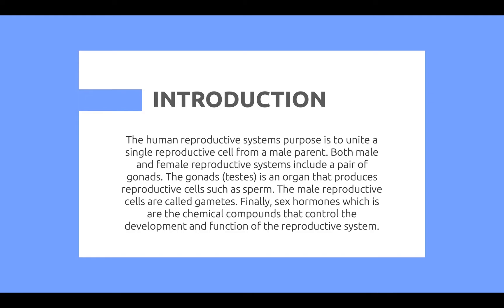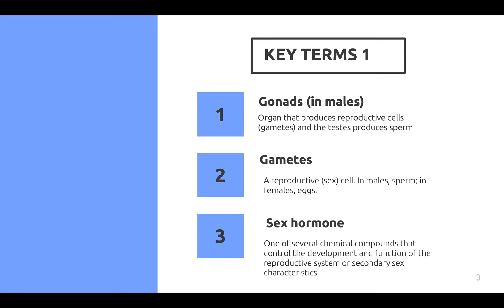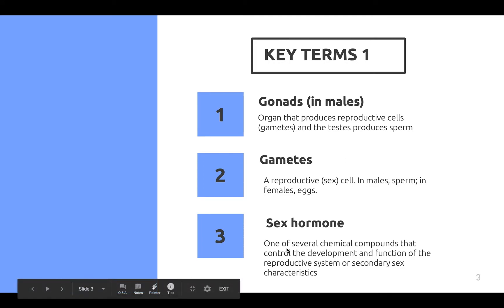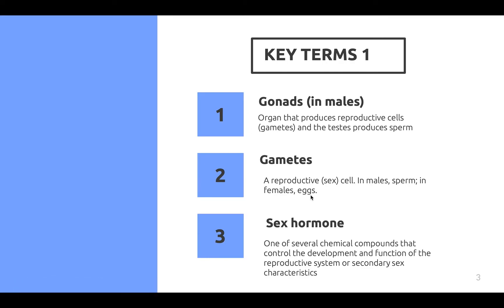Here are three key terms important in this section. First, gonads in males are organs that produce reproductive cells called gametes, and the testes produce sperm. Gametes are reproductive sex cells — in males they are called sperm and in females they are called eggs. Lastly, sex hormones are chemical compounds that control the development and function of the reproductive system or secondary sex characteristics.